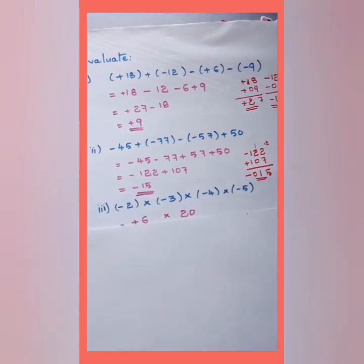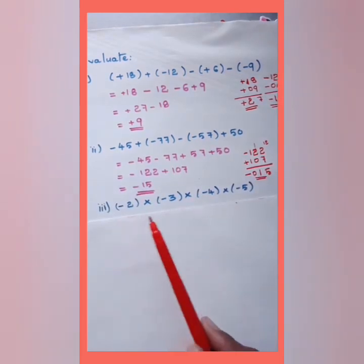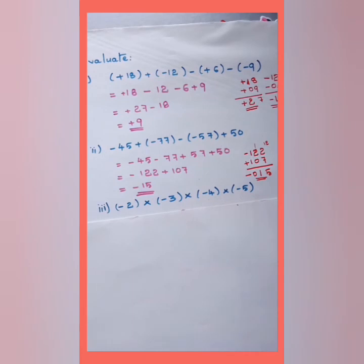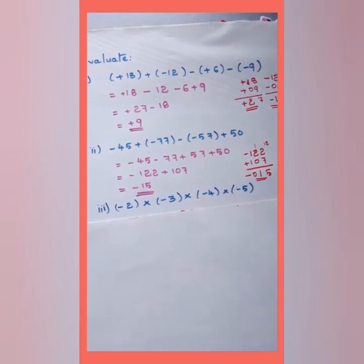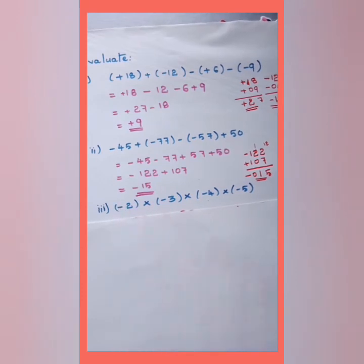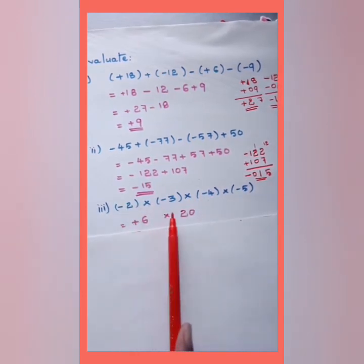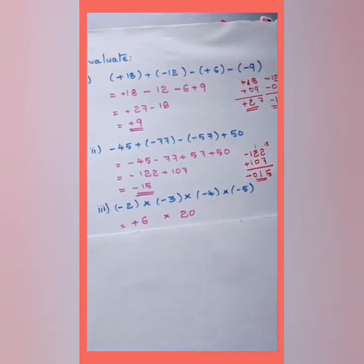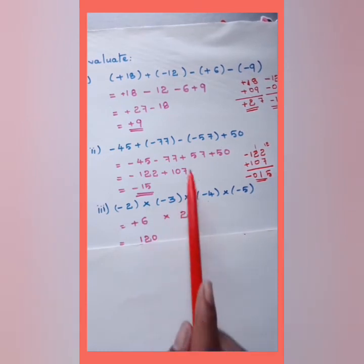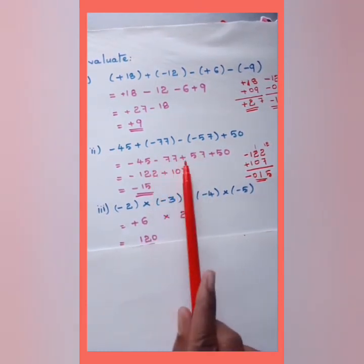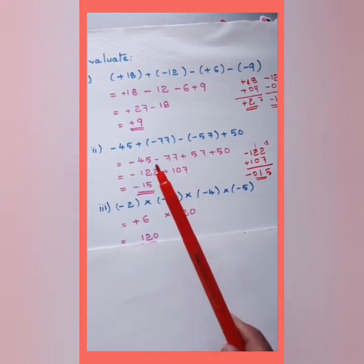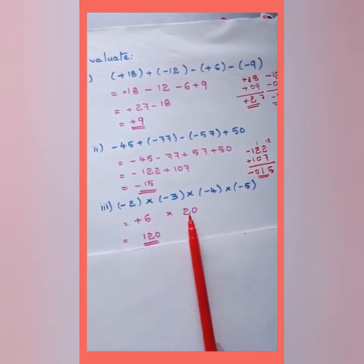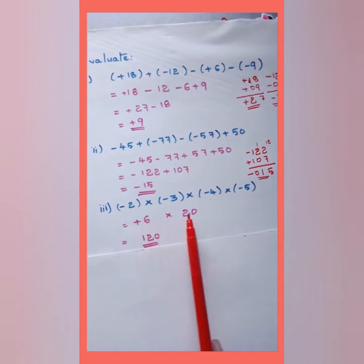Next is a multiplication example: (−2) × (−2) × (−3) × (−4) × (−5). With all multiplication signs, take any two numbers and simplify. Minus × minus = plus, so (−2)(−2) = +4... working through: (−2)(−2) = +4 is not shown — rather (−2)(−3) = +6, and (−4)(−5) = +20. Then 6 × 20 = 120, and since both factors are positive the answer is +120.